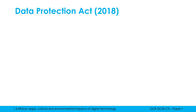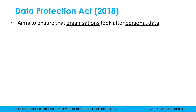The next piece of legislation is the Data Protection Act, a much more recent bit of legislation. As opposed to the Computer Misuse Act, which targets individual people, the Data Protection Act aims at organizations, ensuring that organizations look after personal data. Companies collect so much data about us — this law ensures it's being looked after and that they're not being careless with our data.